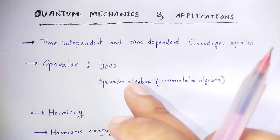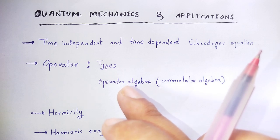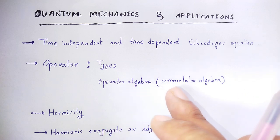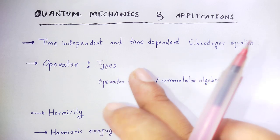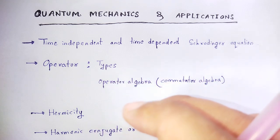This is operator algebra, where we'll discuss operator addition, subtraction, multiplication, and division. We have also discussed the commutation relation, commutator algebra in case of operators, operator commutation algebra.